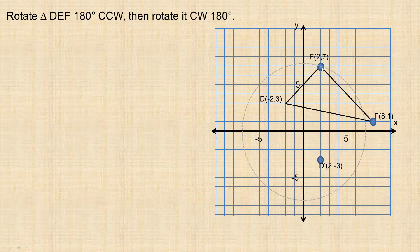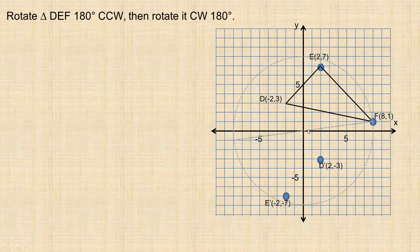Similarly with point E — there's the circle. Point E's coordinates are (2, 7), so it's 2 to the right and 7 up, meaning its image is 2 to the left and 7 down. That's what E prime looks like. And then point F: F is (8, 1), so it's 8 to the right and 1 up, meaning we go 8 to the left and 1 down. F prime is (−8, −1).